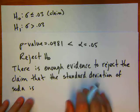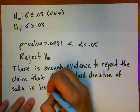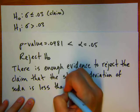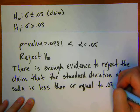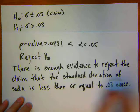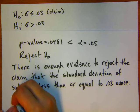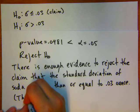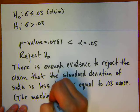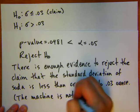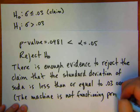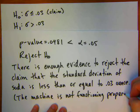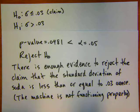The claim was that the standard deviation of soda is less than or equal to 0.03 ounces. In other words, the machine is not functioning properly. You would want to shut it down, readjust it, and go from there. Hopefully that helps.